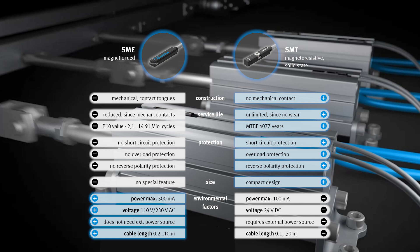However, there are environmental factors that require a mechanical reed solution of the SME. The SME reed sensor supports loads greater than 100 mA and maximum current up to 500 mA. It is suitable for applications ranging from 110 to 230 volts with AC power. It also does not require an additional power source.